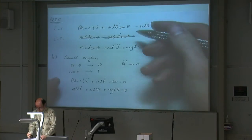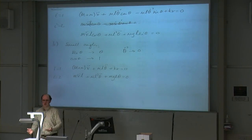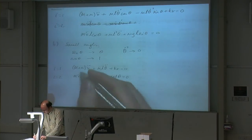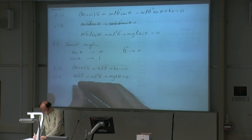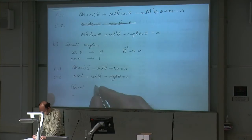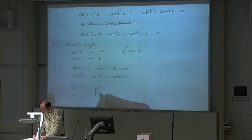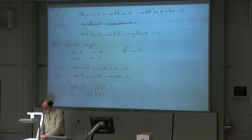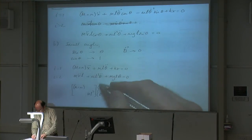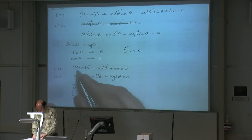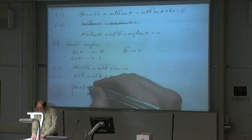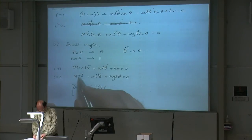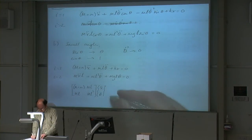So those are the small angle approximations for that system. It suddenly becomes a linear system, because we can write this in matrix form. If we have M+m, this is multiplied by Ẍ. Down here we've got θ̈, and you can see θ̈ is ML². But notice that they're coupled together, so MLθ̈ is in this equation, so that needs to be up here. And here we've got mLẌ, so that needs to be down here.